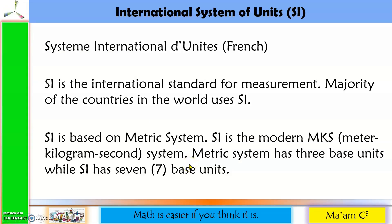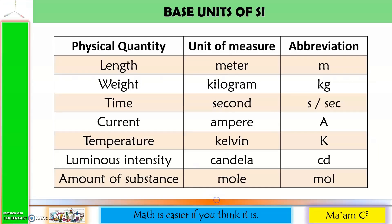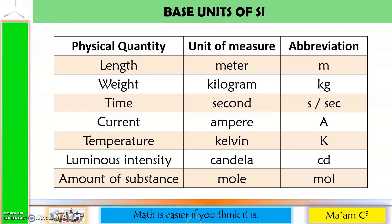The metric system is the modern MKS system. While the metric system has 3 base units, SI has 7 base units. Here are the 7 base units of the SI system: length, weight, time, current, temperature, luminous intensity, and amount of substance. Since SI is based on the metric system, we will focus our discussion on the metric system.